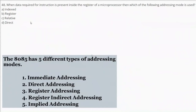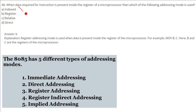When data required for an instruction is present inside a register of a microprocessor, which addressing mode is used? The answer is register addressing mode, because register addressing mode is used when the data is present inside the register of the microprocessor. For example, MOV B, C — where B and C are registers. Different addressing modes include direct, register, register indirect, and immediate.